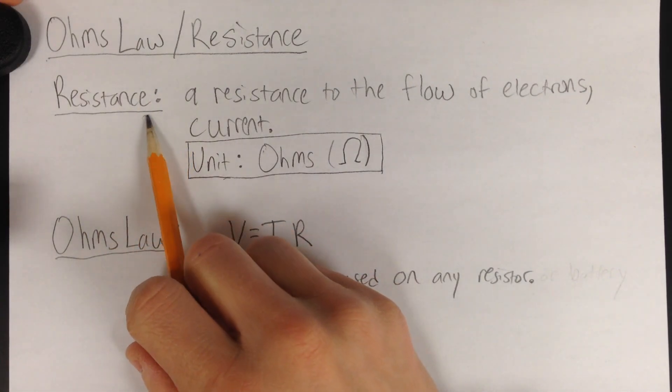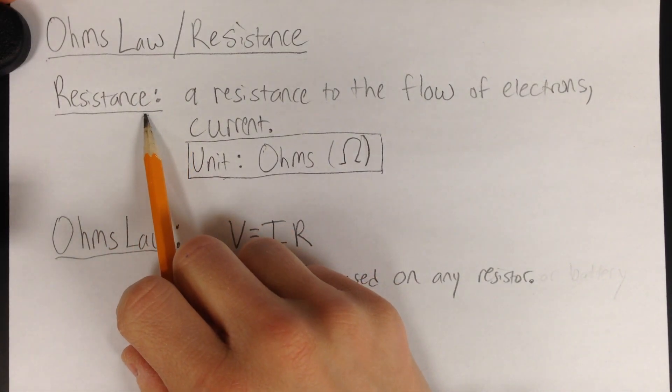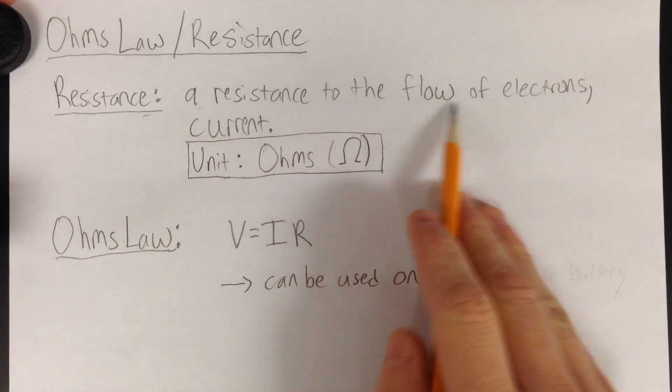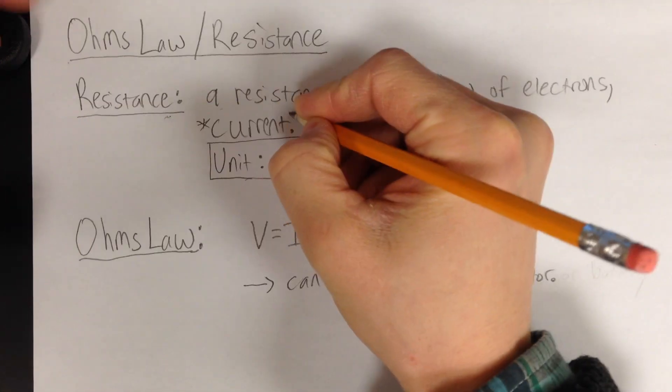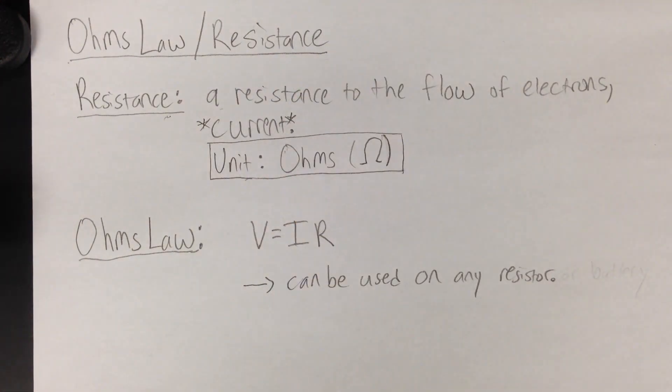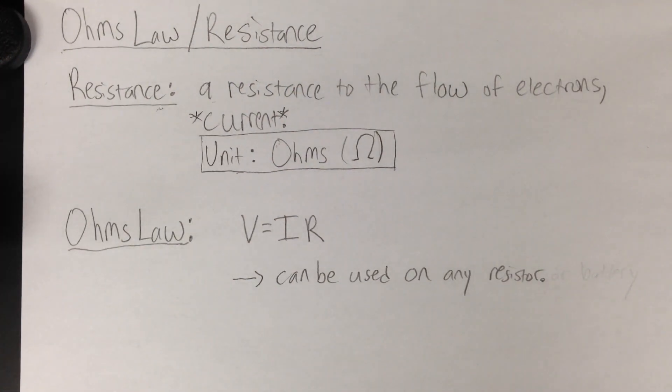First we'll start with resistance. Resistance is a resistance to the flow of electrons. So it's a resistance to current, really. That's what electrons do when they flow - they have a current.